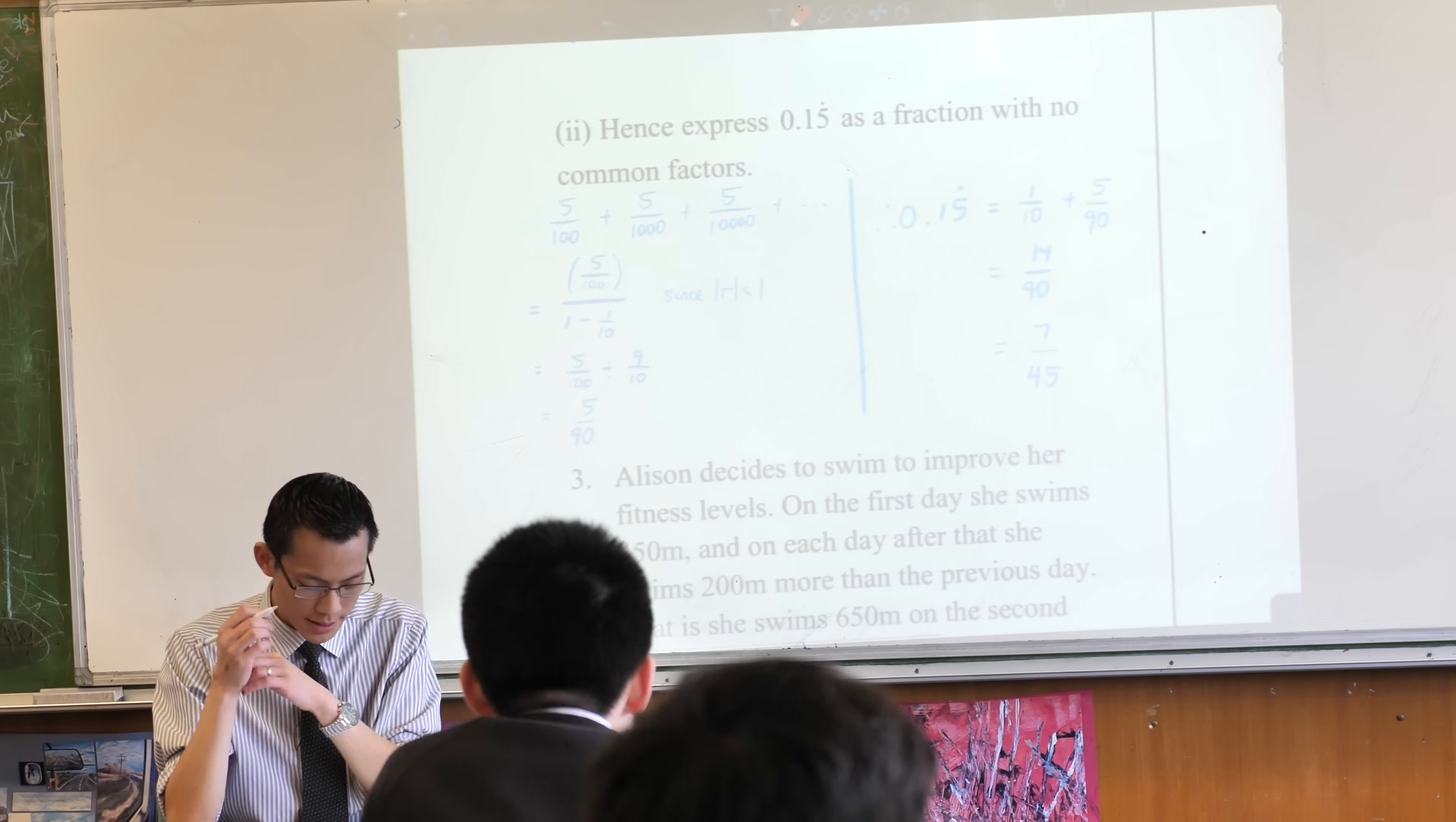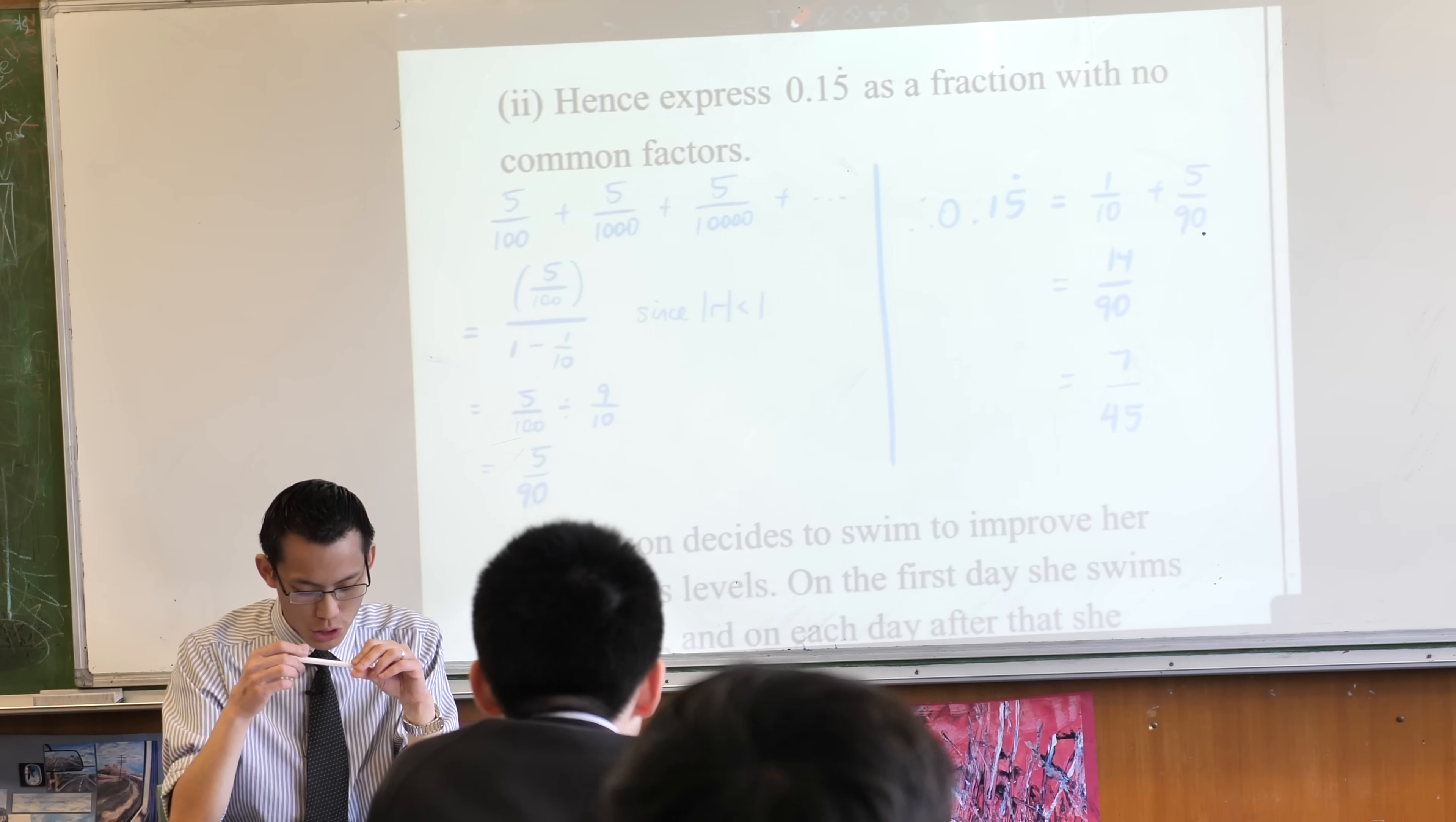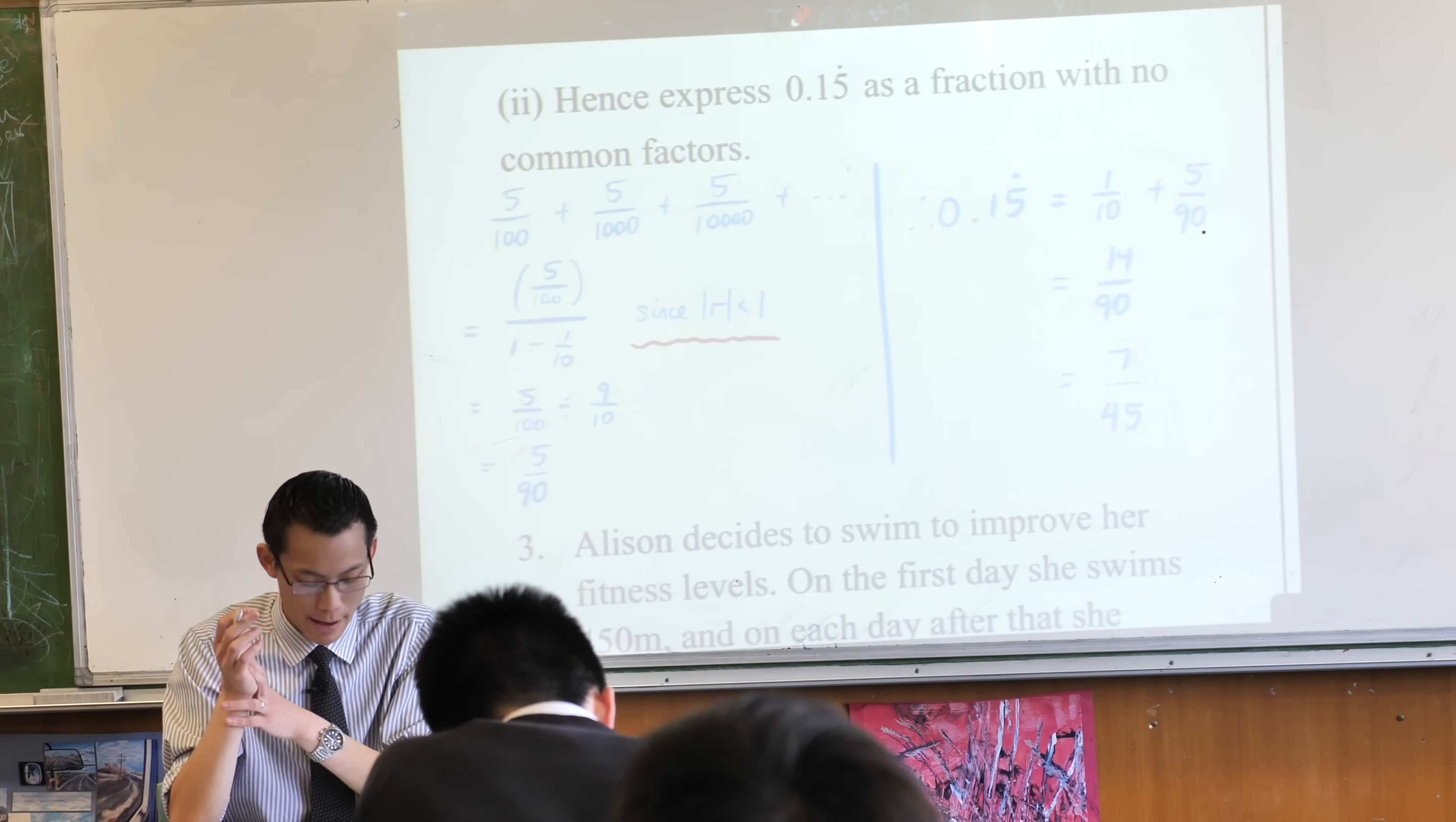You can see, it then says, hence express. Sorry I didn't give you enough space there. My bad. I only realized after I printed it and I did my own solutions. You can see, this is what I'm talking about. Right? I use the limiting sum formula, but I say that the reason I could do that is because the common ratio is between these bounds. Okay?